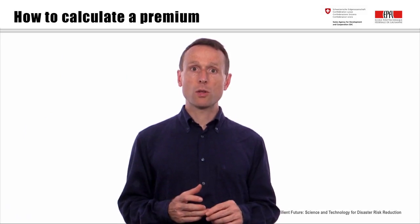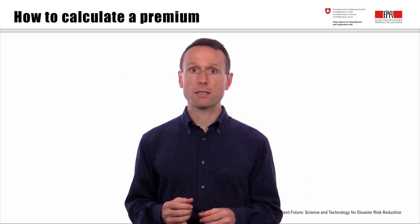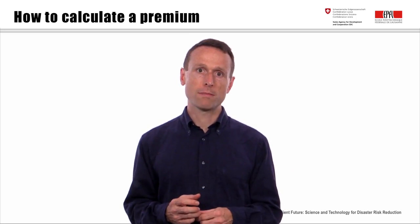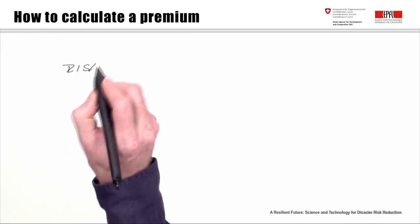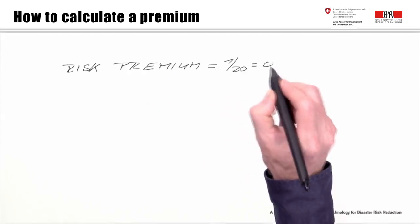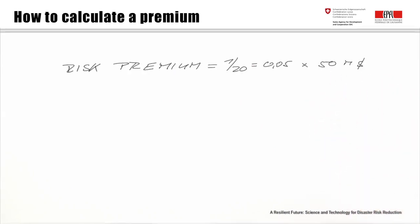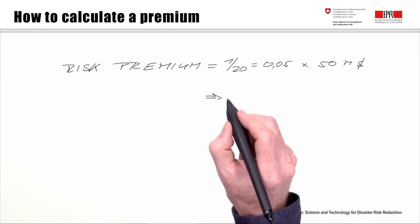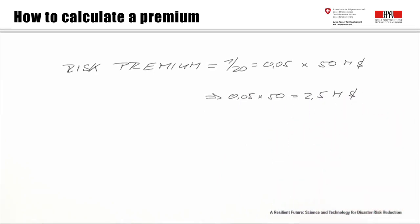The calculation of an insurance premium — the price to pay for transferring a certain risk — can be highly complex in practice, but the basic components are simple. For example, let's look at a certain flood level that occurs every 20 years. The risk premium would be 1/20 years times the severity. Let's assume the flood costs 50 million dollars, so the risk premium would give us 2.5 million dollars per year to cover the average expected loss over one year.